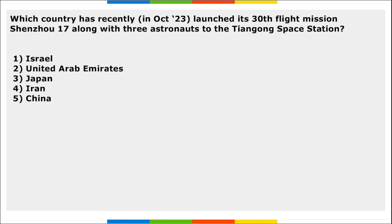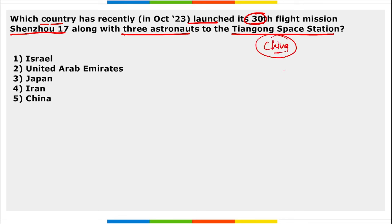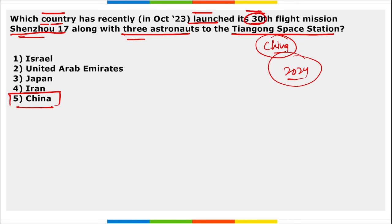Next: which country recently launched its 30th crewed flight mission, Shenzhou-17, along with three astronauts to the Tiangong Space Station? The Tiangong Space Station is being built by China and is expected to be completed by end of 2024. The answer is China.